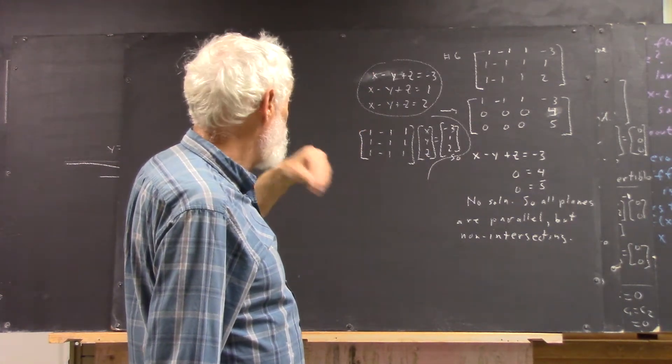So we write the system out. How does the system reveal this? It reveals it by the fact that the augmented matrix reduces to this form. Because if we subtract the first row from the second, we get all zeros and then something that isn't zero. If we subtract the first row from the third, we get all zeros and something that isn't zero.